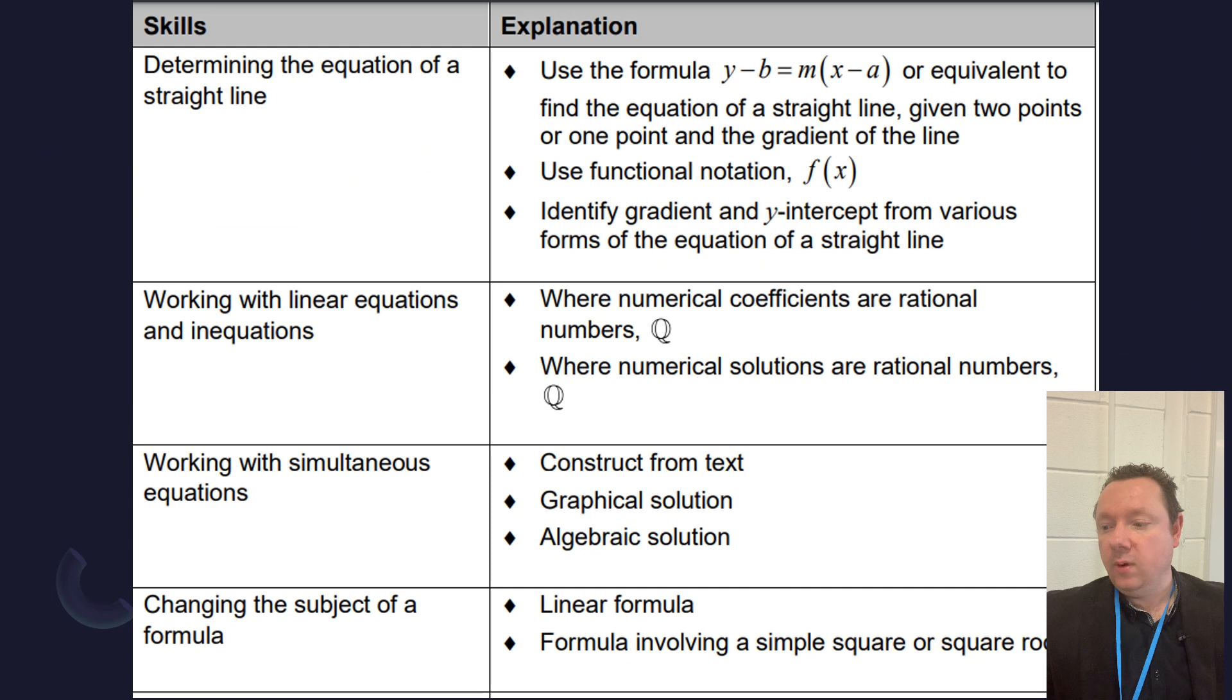Okay, straight line stuff, this is quite a big one as well. You will not be asked to identify the gradient and y-intercept from various forms of the equation of a straight line. What does that mean? It means something like ax plus by equals 3, you'll not be asked what the gradient and y-intercept is at that point. You'll still have to work out the gradient and y-intercept yourself from your own equations, just not from a given equation or graph.